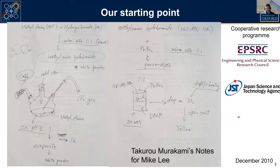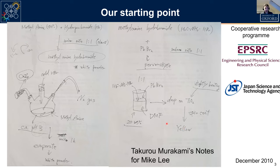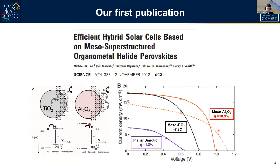Our starting point for perovskites is summarized in these two little scribbled notes, which are literally our starting point. These are notes that Taku Murakami, my collaborator from Tuan University, managed to extract from Akiro Kojima — the first author on the 2009 paper. This was the starting point for how to make methylammonium lead iodide or lead bromide, and we started looking at these in a collaborative project in what were then solid-state dye-sensitized solar cells. I sent a student, Mike Lee, to Japan on a collaborative project with Taku, and we started this work.